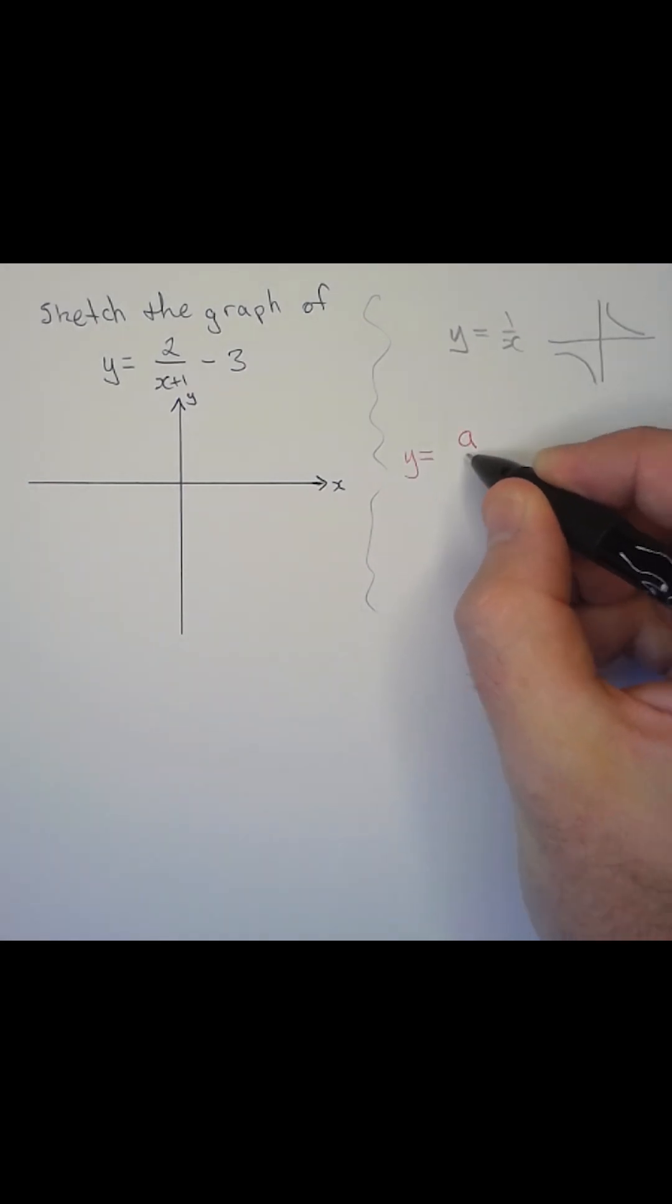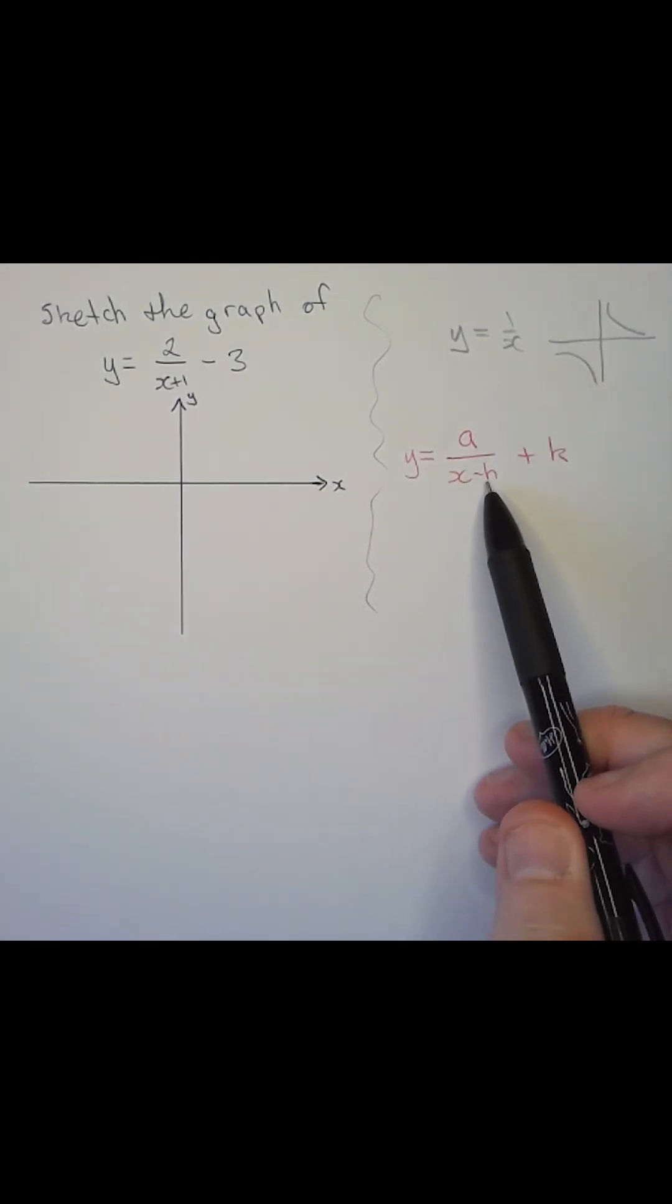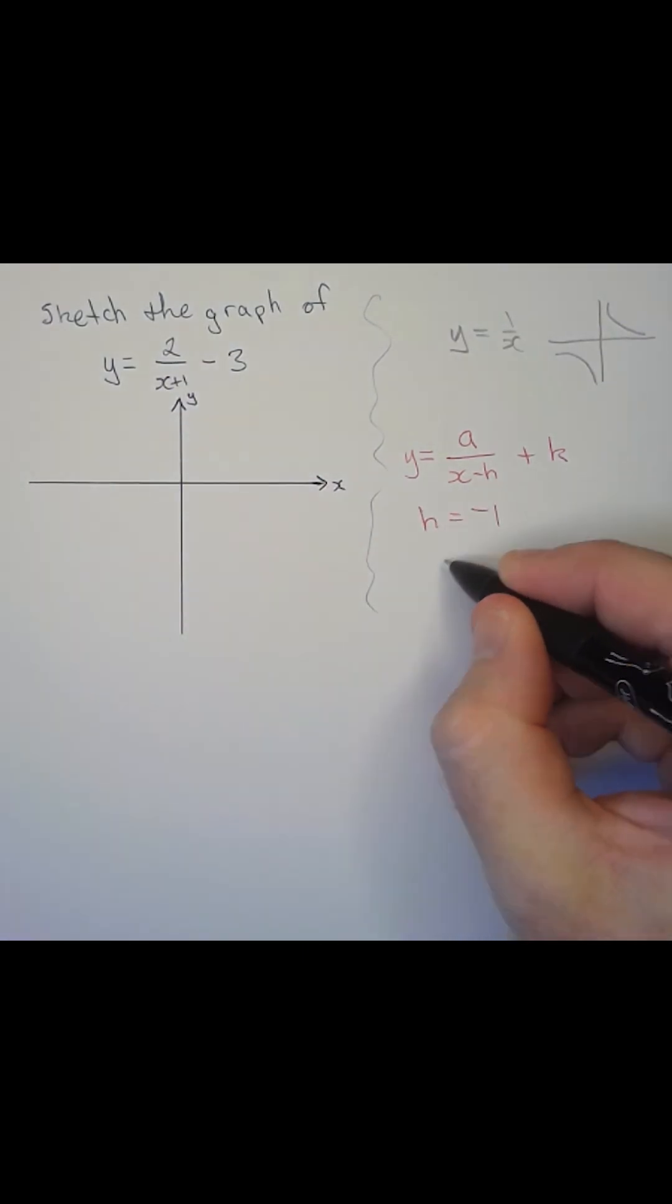The function y equal to a over x minus h plus k is like 1 over x but shifted h horizontally and k vertically. We have h equal to minus 1 and k equal to minus 3.